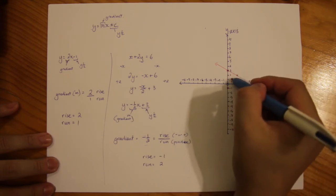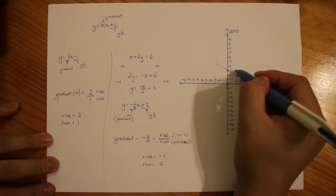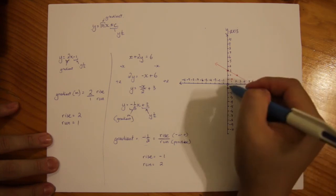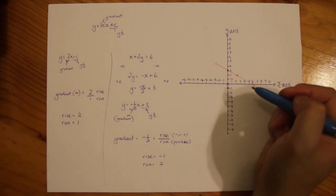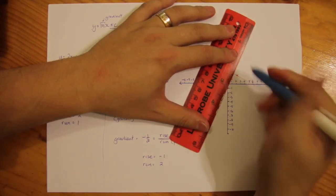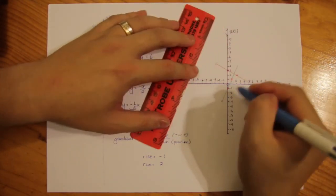If we keep going, we go 1, 2 up, 1 across, 1, 2 up, 1 across and so forth. But we only need to work out the second point. Use a ruler and jot the 2 points like so.